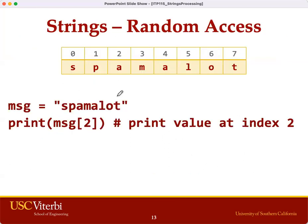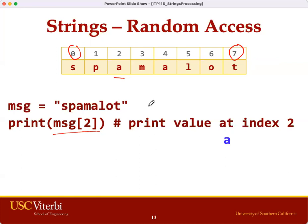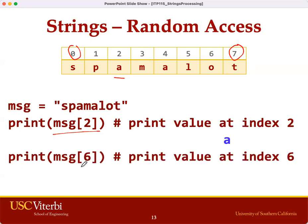In this example, we have the same string 'spamalot' with 8 characters, valid index from 0 to 7, which is 8 minus 1. A character at index 2 should be 'a'. A character at index 6 should be 'o'.